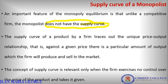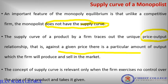To identify a supply curve, we have to identify the price-output relationship. That is, against a given price, there is a particular amount of output that a firm produces and sells — and that is the supply curve.